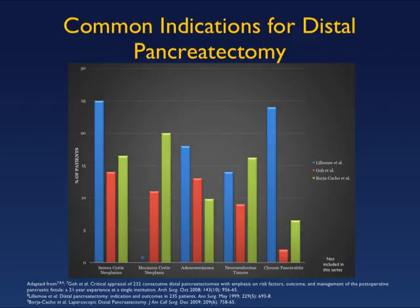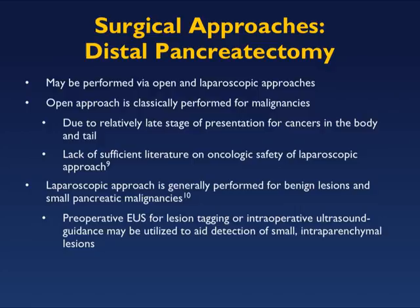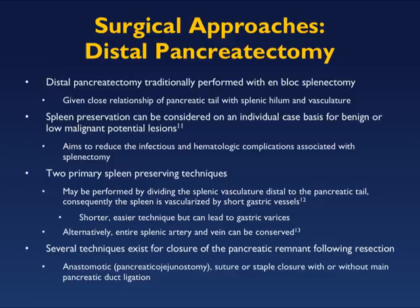Regarding surgical approaches, both open and laparoscopic are used. At Hopkins, laparoscopic or robotic is the typical approach. The open approach is classically used for malignancies when there is concern about tumor spread, though laparoscopic approaches can also sample nodes. There is significant ongoing work improving the laparoscopic approach for distal pancreatectomy — especially for small lesions like neuroendocrine tumors, uncertain lesions, and even adenocarcinoma. With either approach, there is typically an en bloc resection of the tail and spleen.